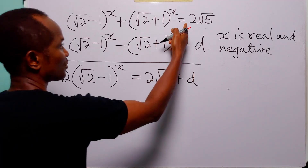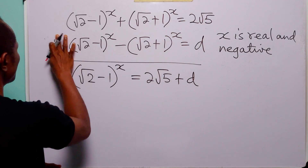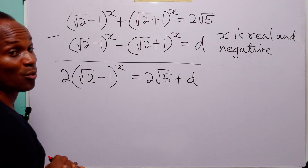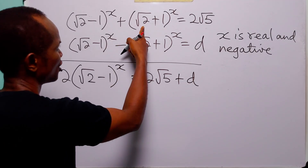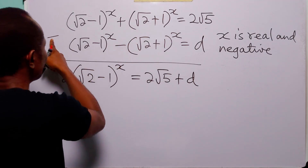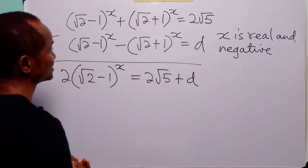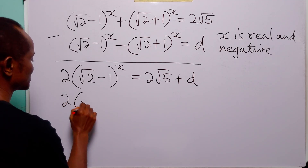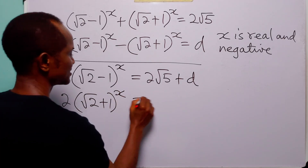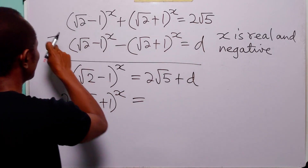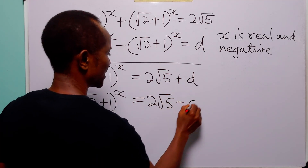The next thing we are going to do is subtract the second equation from the first equation. Notice that when we do this, terms are eliminated and we get 2 times (√2 + 1)^x, which is equal to 2√5 minus d.